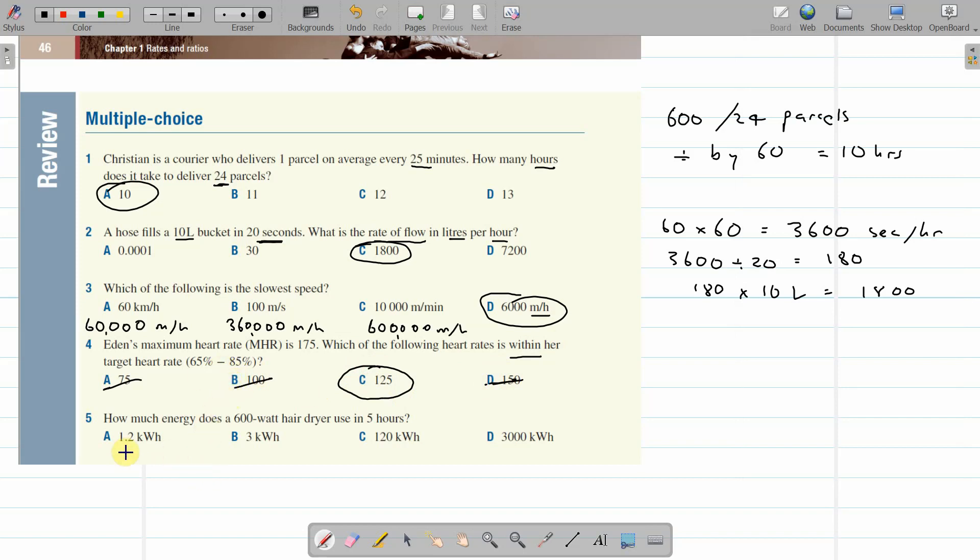How much energy does a 600 watt hairdryer use in 5 hours? Well, for 1 hour it's 600 watt hours, because this is measured in watts. So for 5 hours, 600 times 5 is 3,000 watt hours. That's in 5 hours.